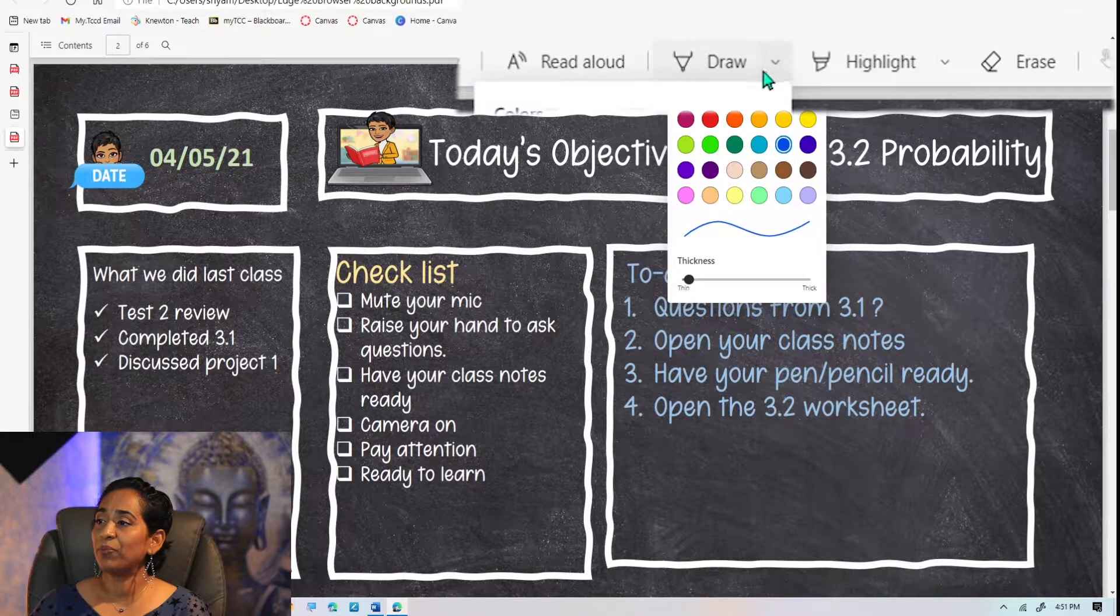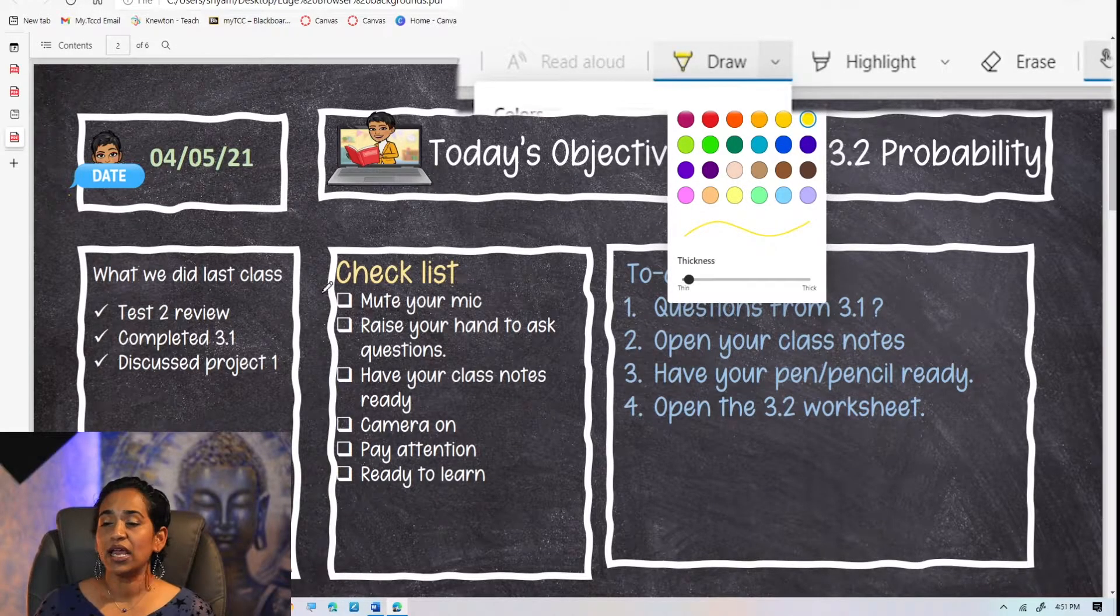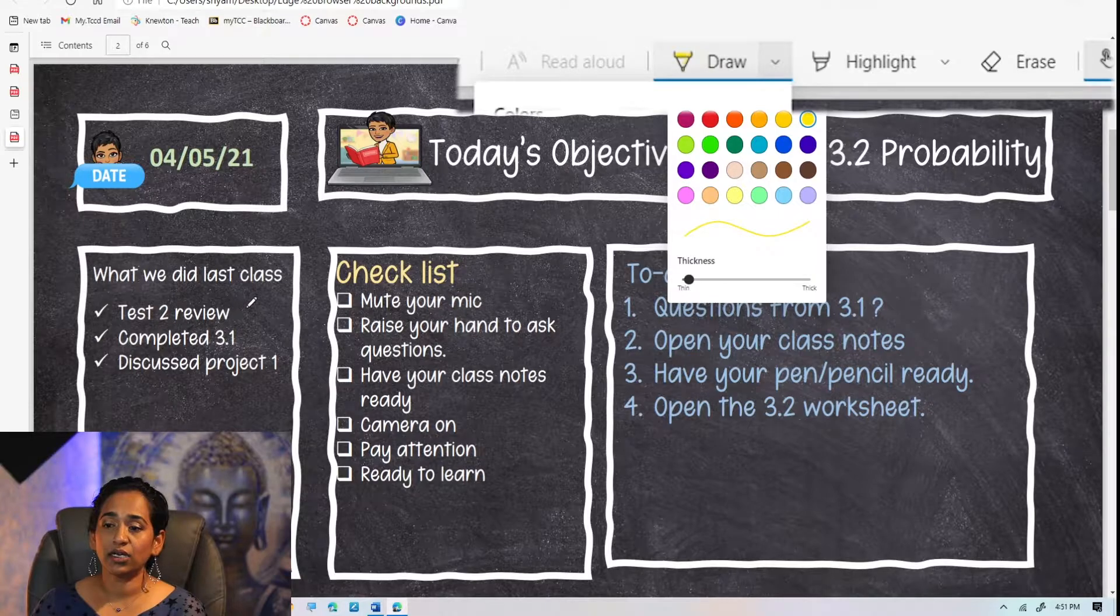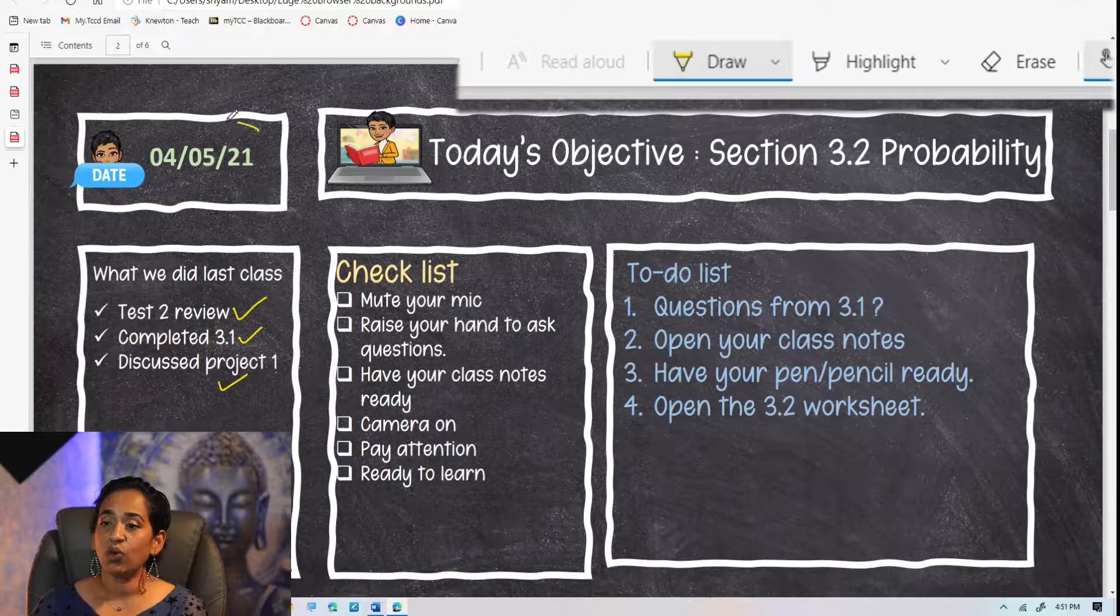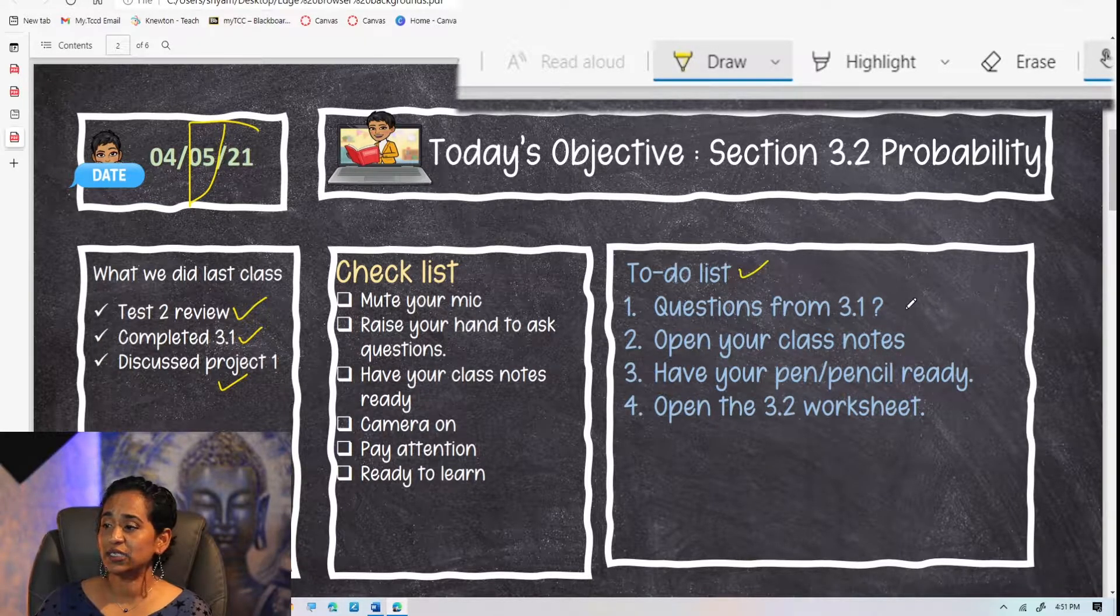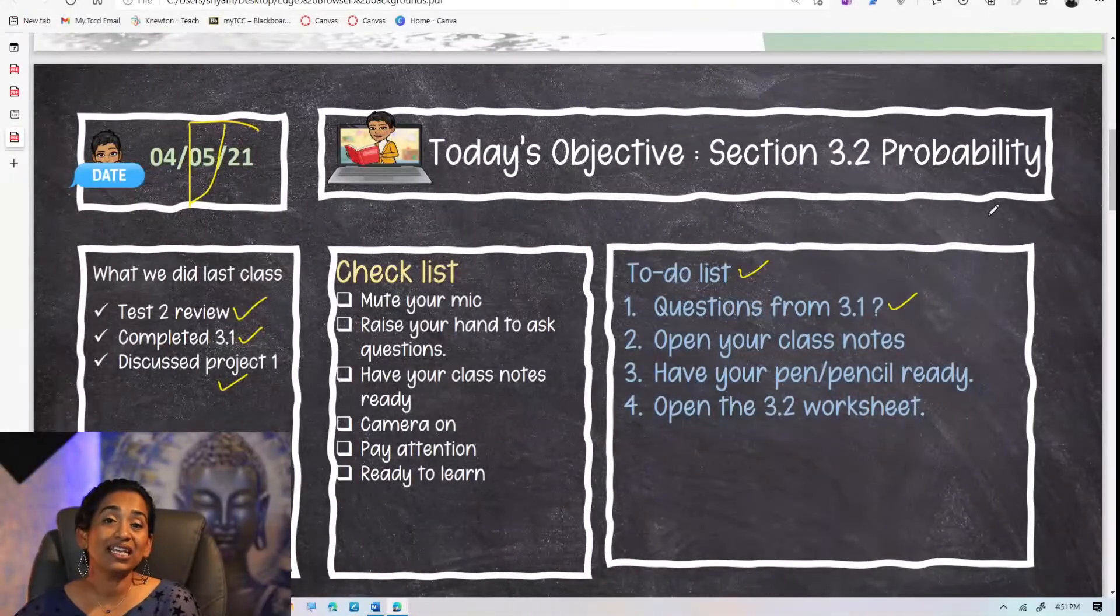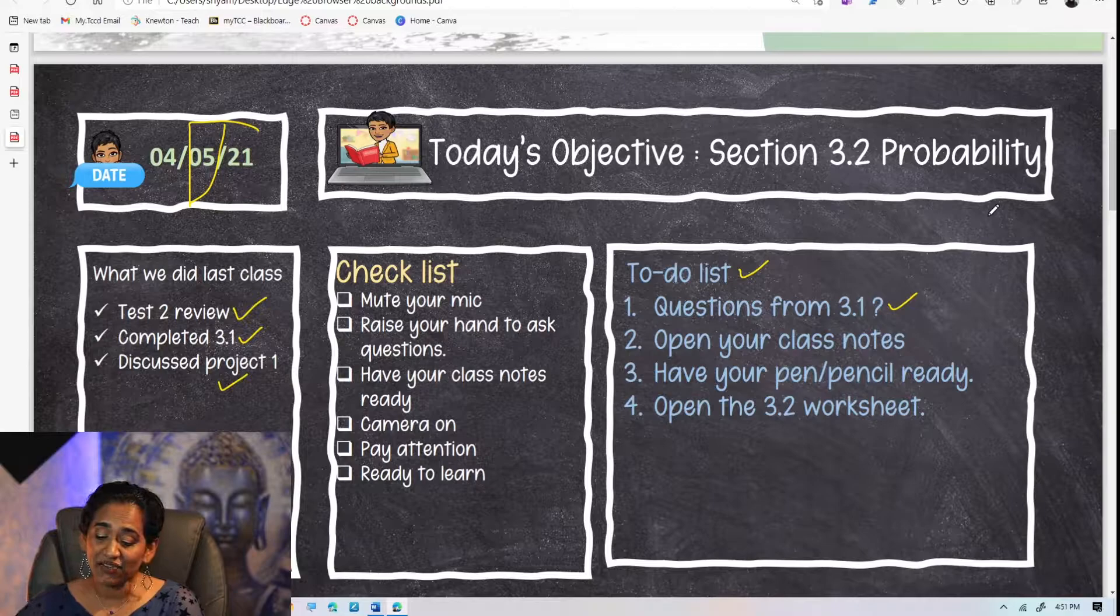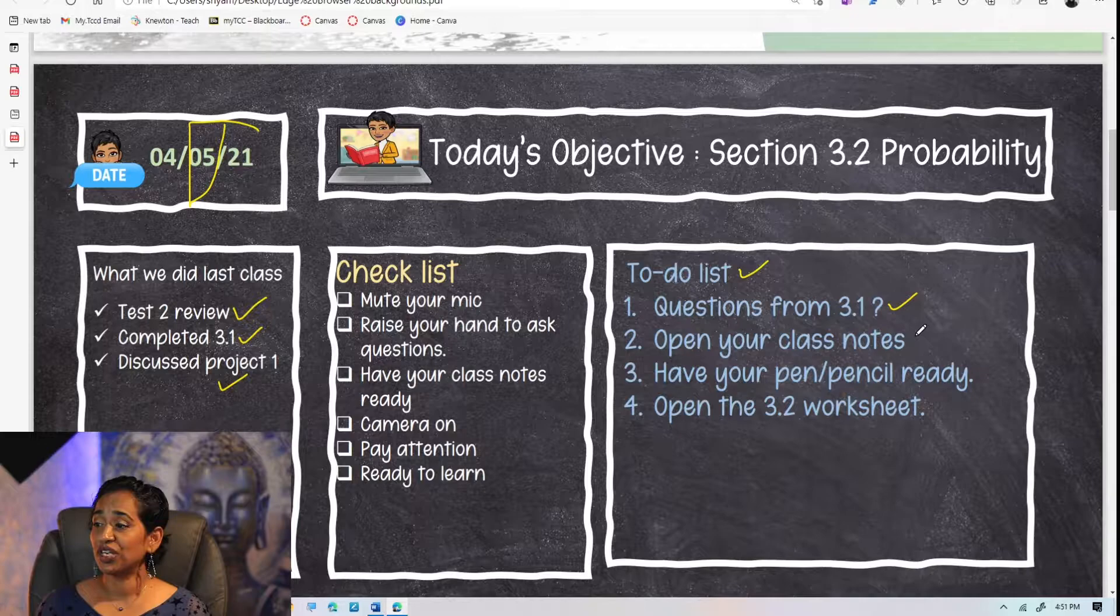I'm going to go ahead and pick a white, now yellow color, because it's a blackboard. And I'm going to ask my students, test to review done. Did you complete 3.1? Did you discuss the project? Whatever the date this is. My to-do list and questions from 3.1. As you can see, you can customize all of these, save them as a PDF, and open that in your Edge browser, and you're ready to go and teach your class.